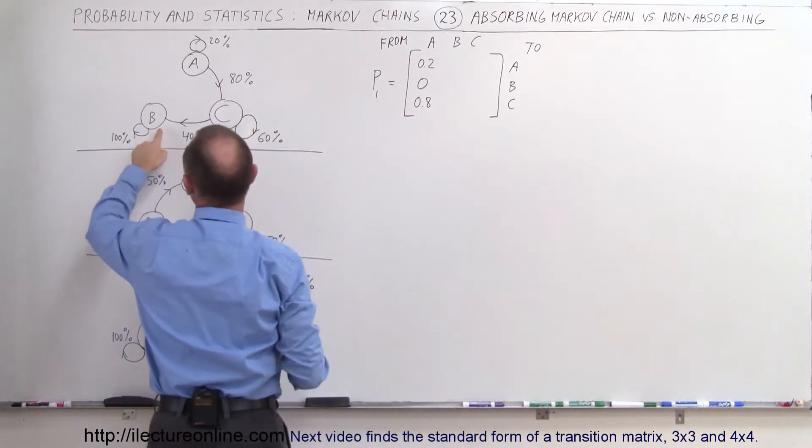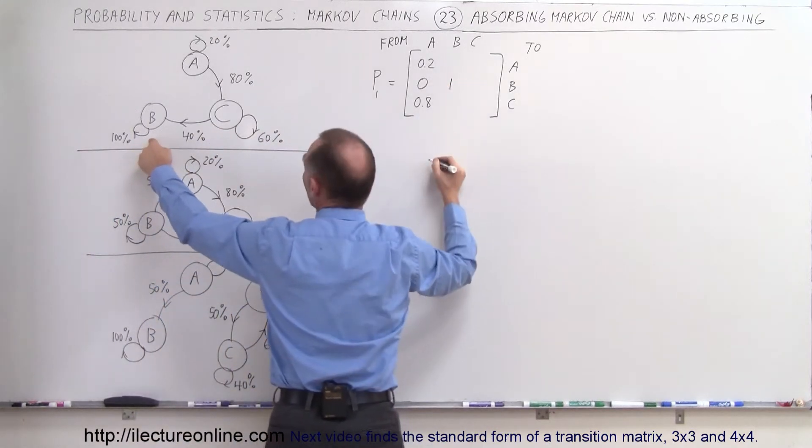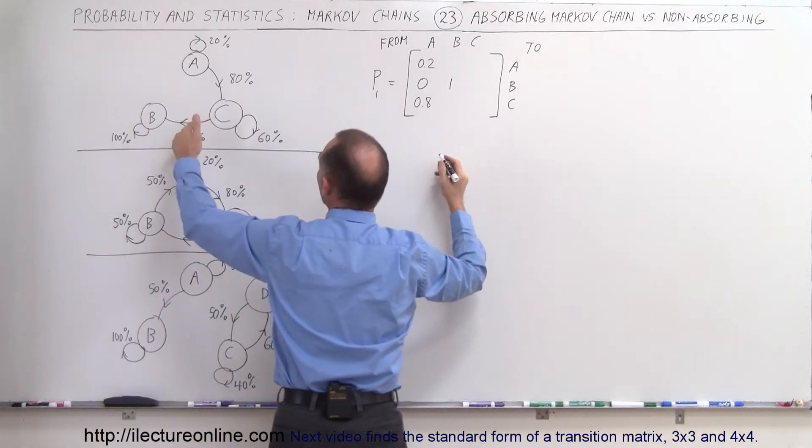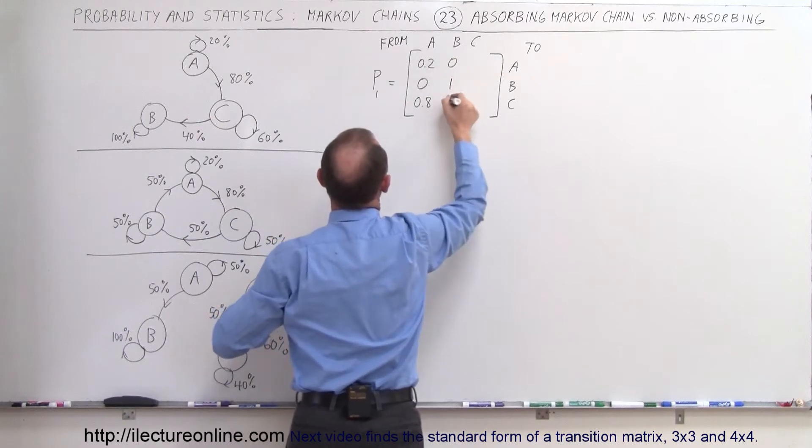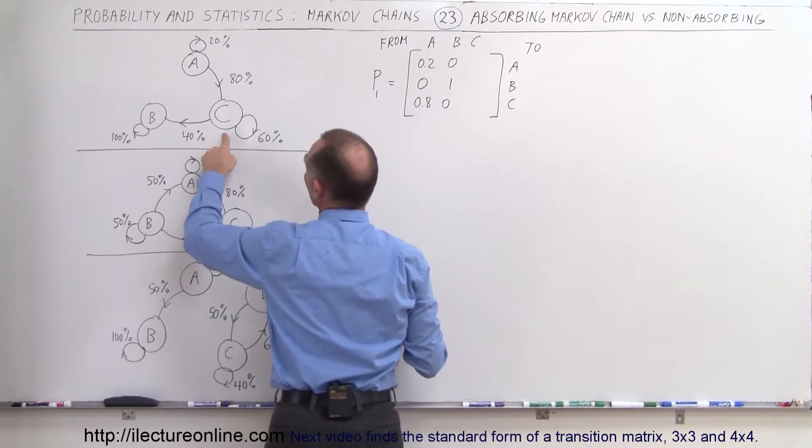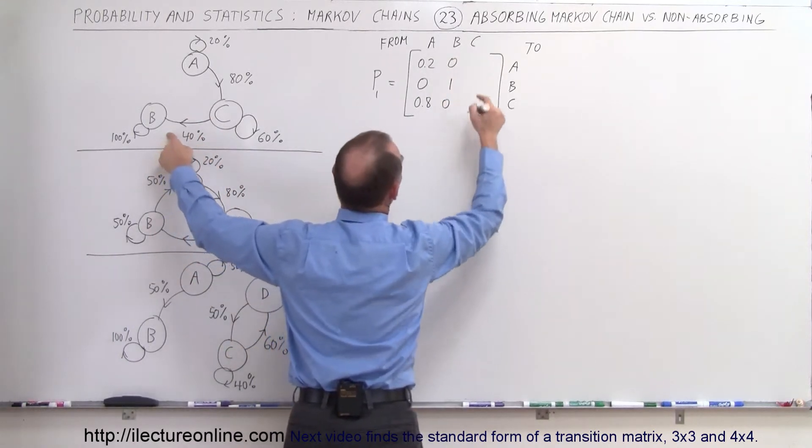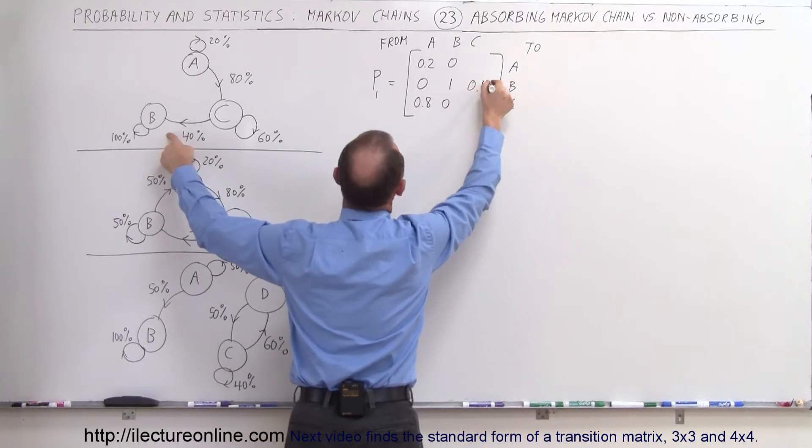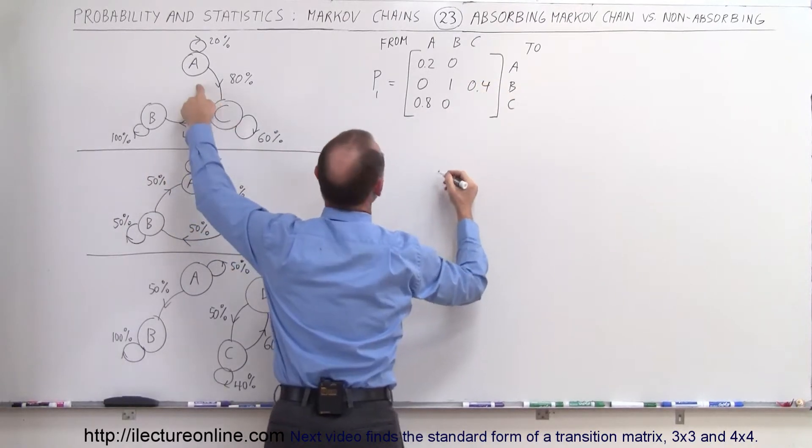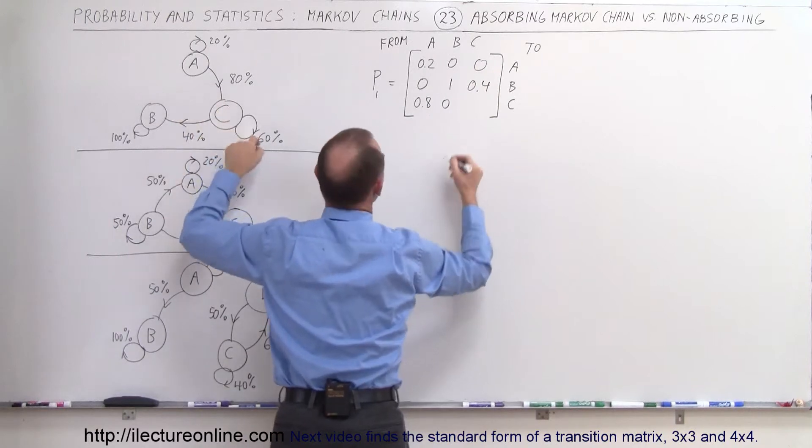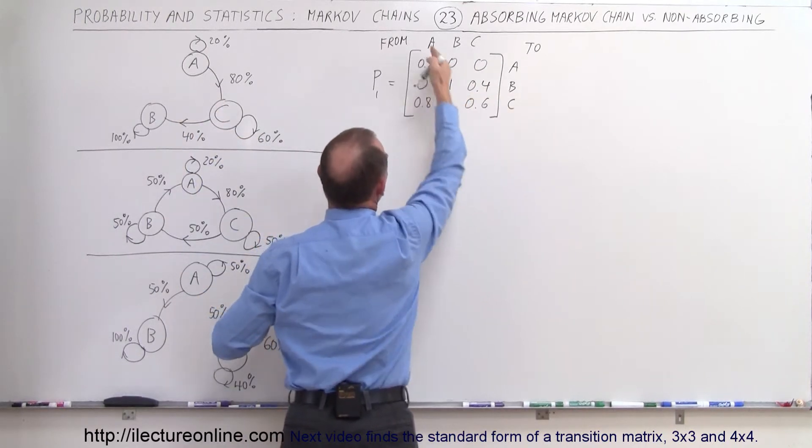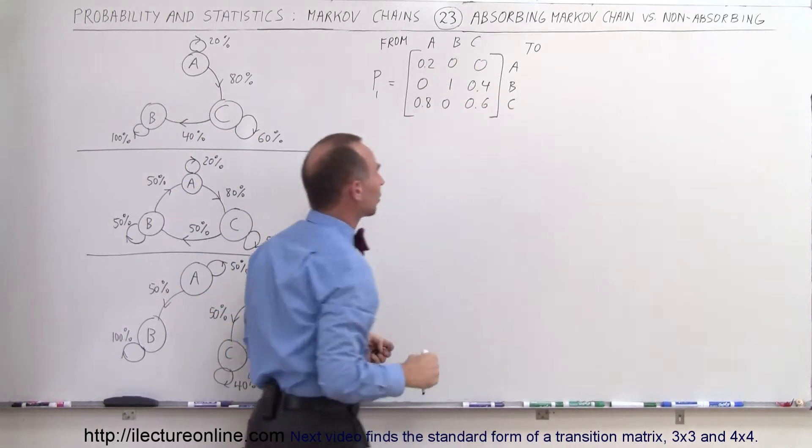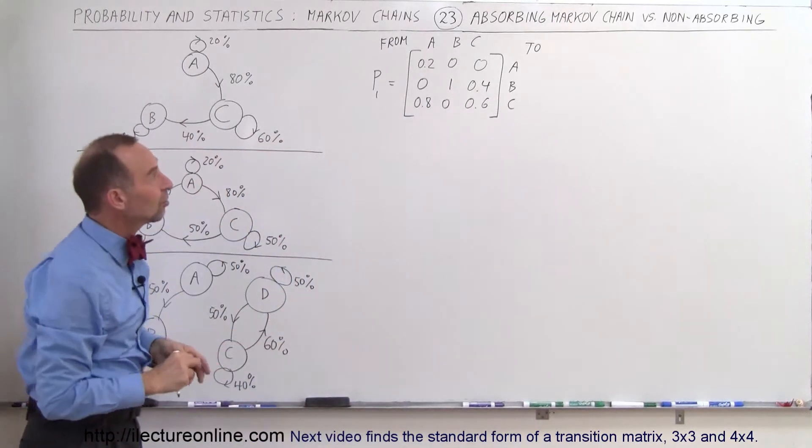All right, now we're going to B. From B to B, it's 100, so that would be 1. And there's nothing going from B to C or from B to A, so that's 0 and 0. From C to B is 0.4. From C to A, that is 0, and from C to C, that would be 0.6. And again, if we add them all up, we get 1 in the vertical column. So that is the transition matrix.